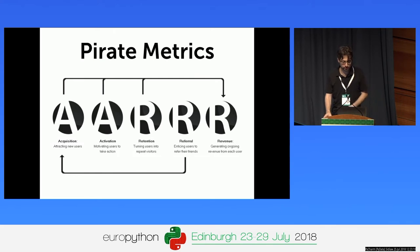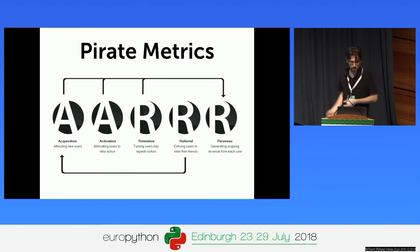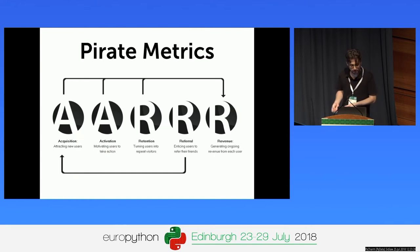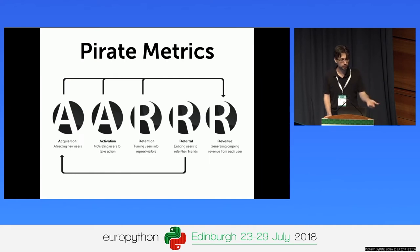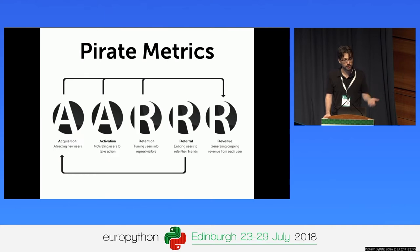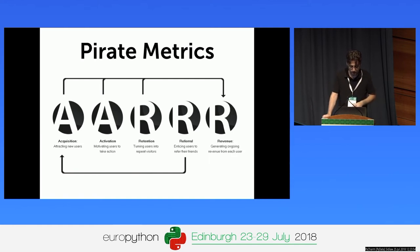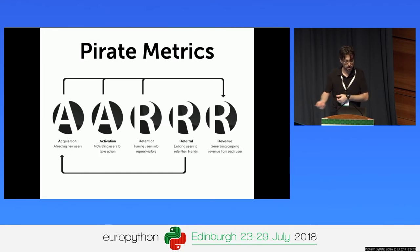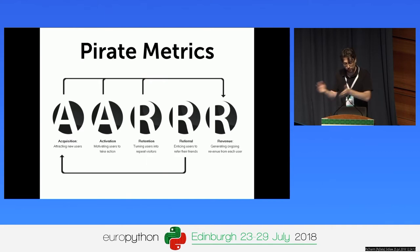The AARRR framework segments the user journey into five steps: Acquisition — attracting new users; Activation — getting them to give you something, like leaving their email, creating an account, or downloading your app; Retention — making them come back regularly; Revenue — how you get money from the user, not necessarily directly; and Referral — where the user recommends your service, which only works if they love it deeply enough to risk their social credibility.